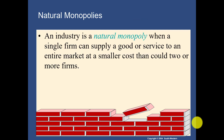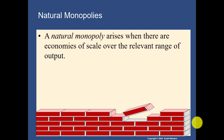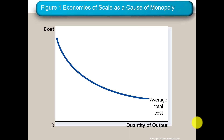An industry is a natural monopoly when a single firm can supply goods or services to an entire market at a smaller cost than two or more firms. A natural monopoly arises when there are economies of scale over the relevant range of output — as you produce more, average costs go down. This cost advantage means any firm entering later would find it very expensive to compete, since the existing monopoly may already be at rock-bottom costs.